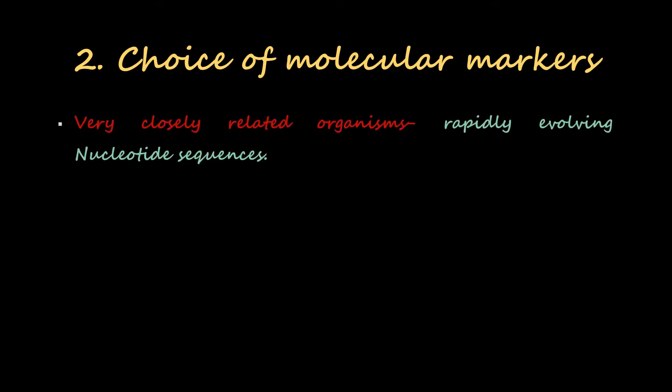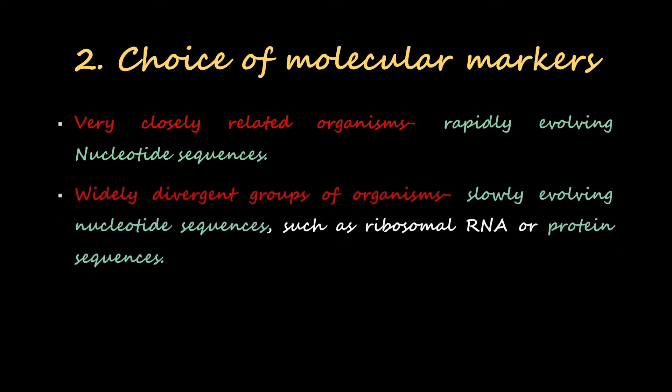When we have very closely related organisms, rapidly evolving nucleotide sequences are used. When we have widely divergent groups of organisms, we usually use slowly evolving nucleotide sequences such as ribosomal RNA or protein sequences.